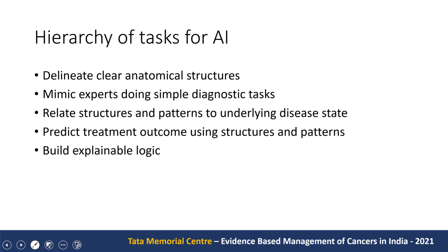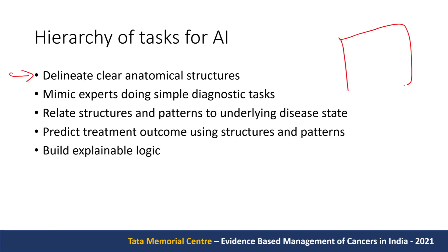AI can enable a hierarchy of tasks, going roughly from easier to more difficult. The lowest-order task is to delineate anatomical structures. So let's say you have a radiograph, and the AI can delineate the ventricle of the heart so that you can do measurements on it very easily or automatically.